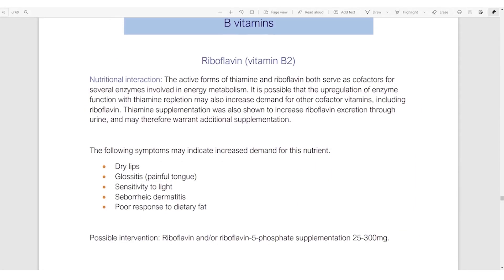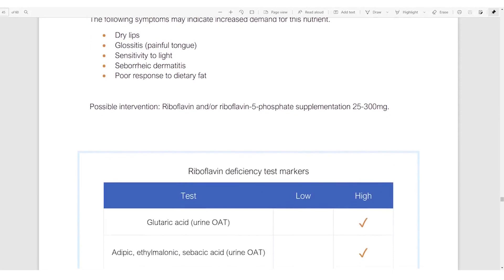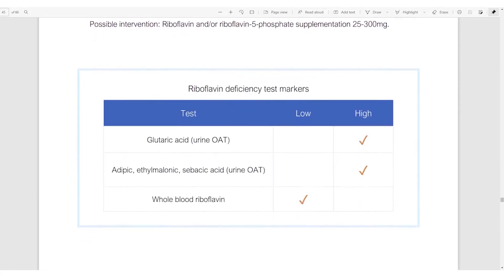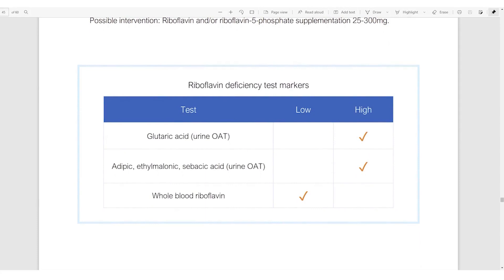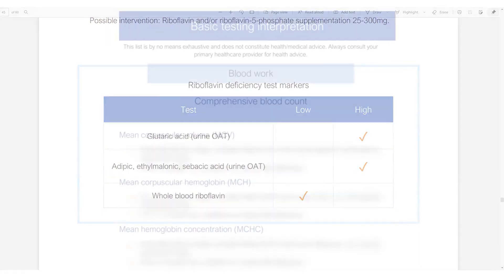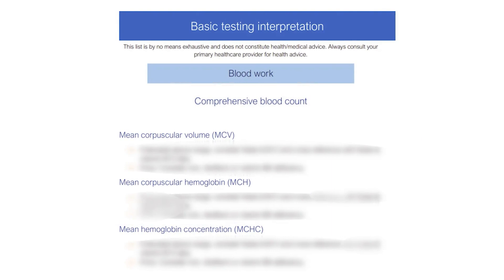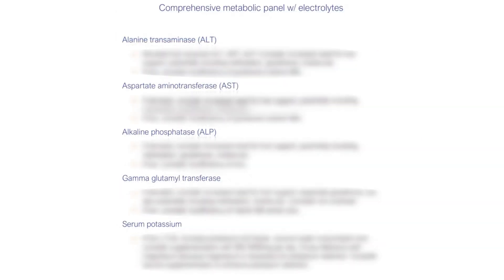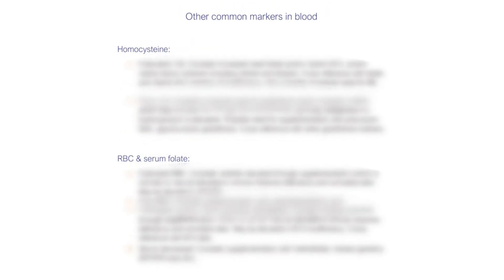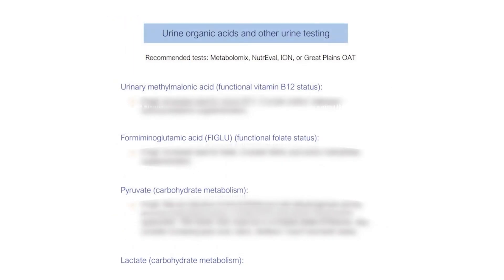We do the same with some of the B vitamins — riboflavin, for instance — how to test for it and how to identify an insufficiency. For blood work, we cover common markers on a comprehensive blood count and comprehensive metabolic panel which might indicate increased need for specific nutrients. We also look at homocysteine and other markers such as uric acid and plasma B6. Finally, we look at urinary organic acids testing to get a better picture of nutritional status and what each marker might mean if it's high or low.